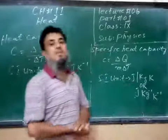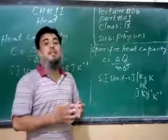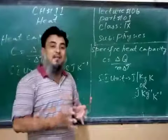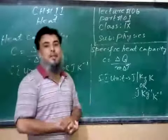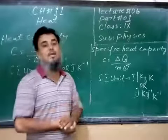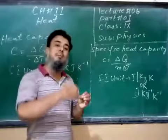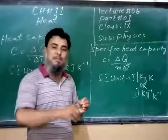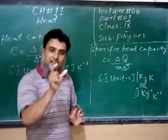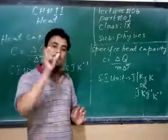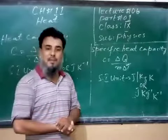Our next topic is specific heat capacity. For specific heat capacity, we need to consider 1 kg of a substance and raise its temperature by 1 Kelvin or 1 degree Celsius. The amount of heat required to raise the temperature of 1 kg of a substance by 1 Kelvin or 1 degree Celsius is called specific heat capacity.